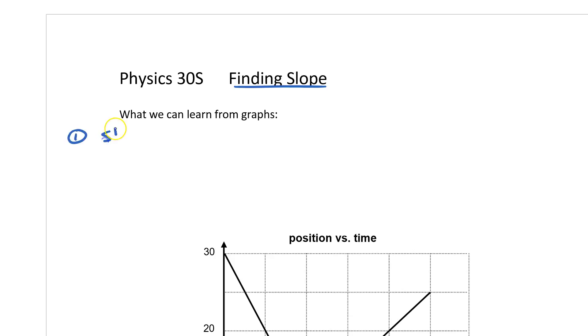One of them is we can look at slope. Another one that we can look at is the y-intercept. A third one is the area under the line, and I don't think we've done that yet in this course. And the last one is that from the graph we can develop a mathematical model.